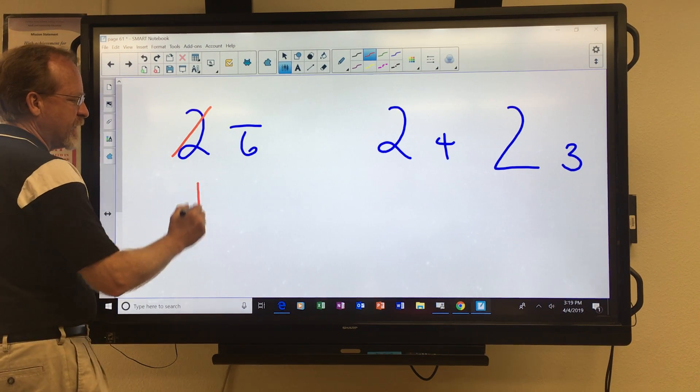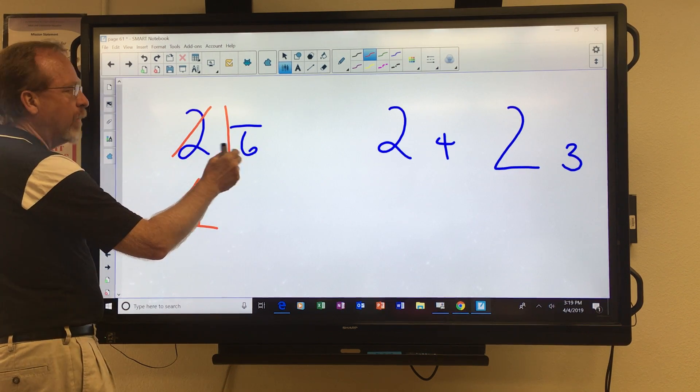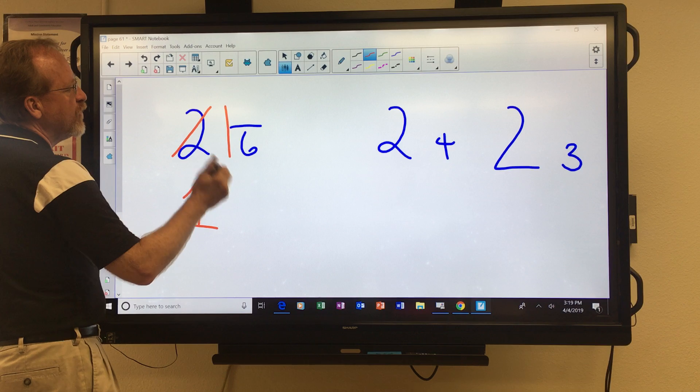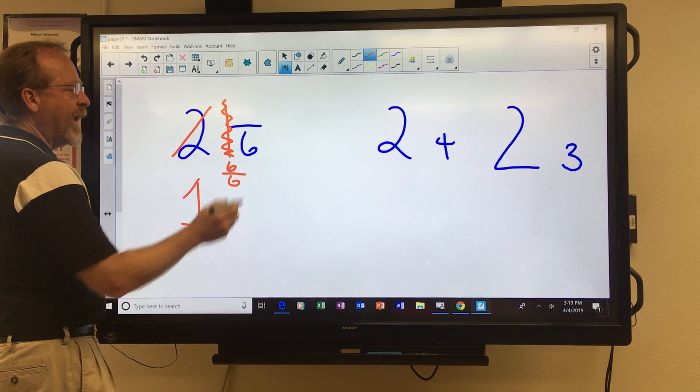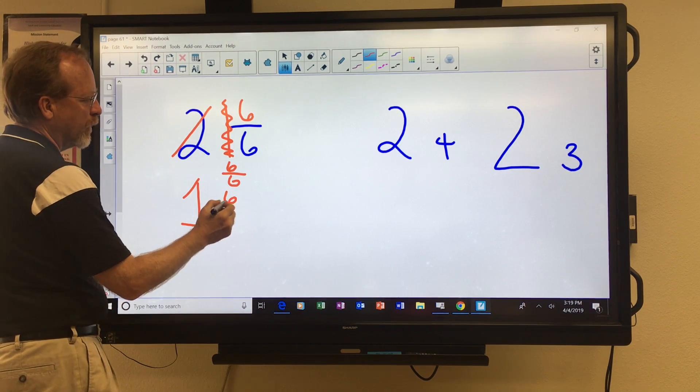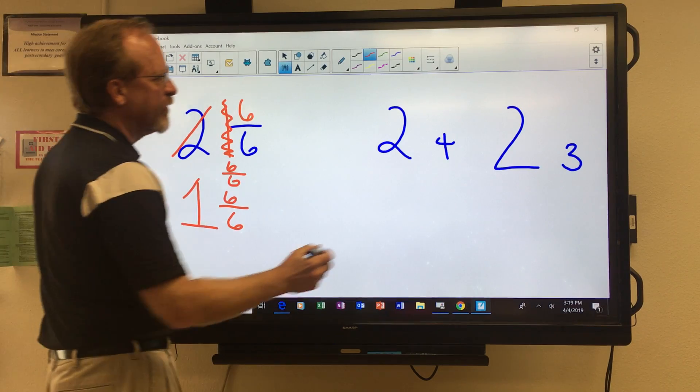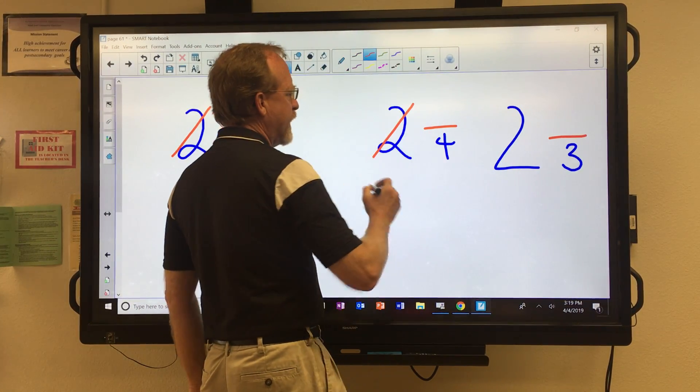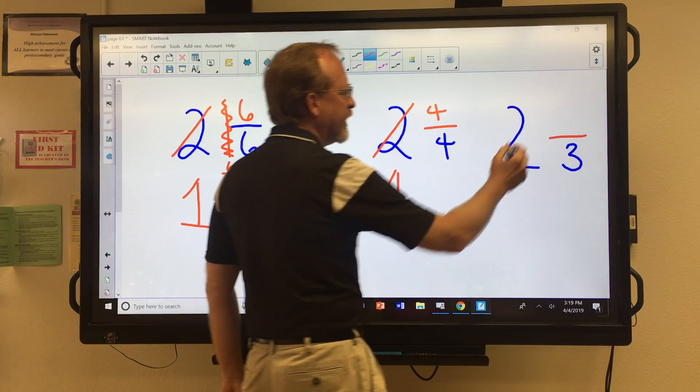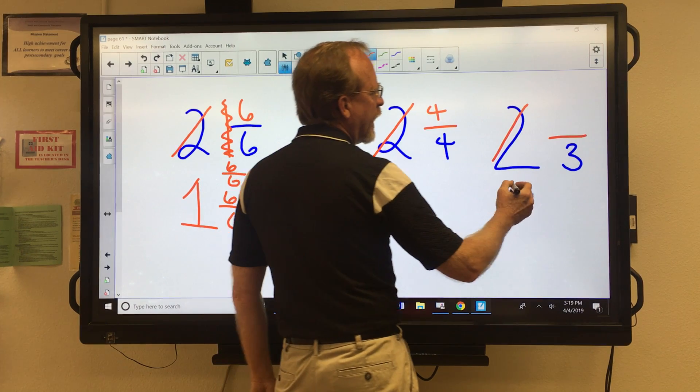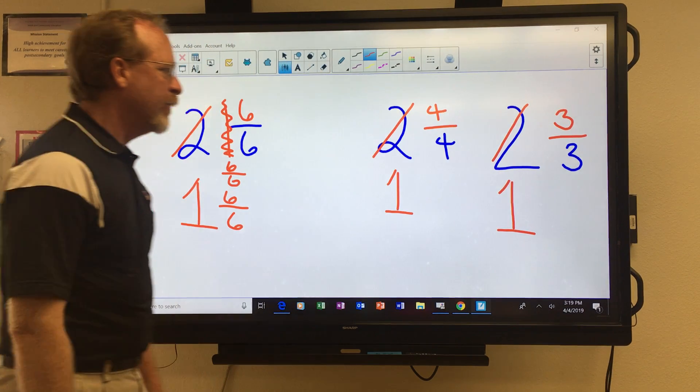Let's borrow one from this side and put it over here. Now, I'm going to change that one to six over six. And I'm going to add it there. So, I can change two to one and one-sixth. Here, I could take away a one, and I could put it there. Four over four, which is equal to one. I could borrow one here and go three over three.